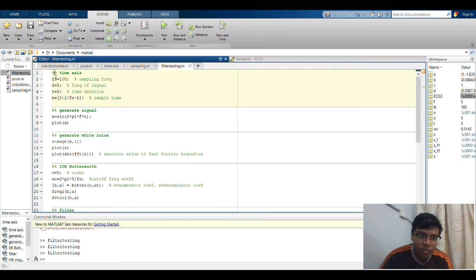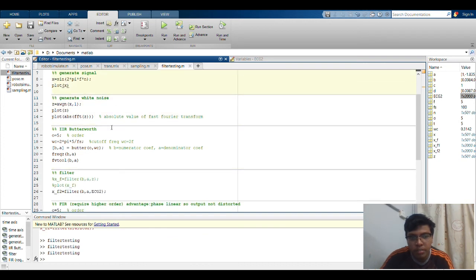This is the coding that has been developed. First we set sampling time equal to 100, the frequency to 5, the time duration 5, and then the cutoff frequency, as you can see here. Then we choose Butterworth, so the equation is butter 0 and omega C. We set B and A as the denominator and numerator respectively. And then the frequency Z and FV tools are used to create the Bode plot for our design here.